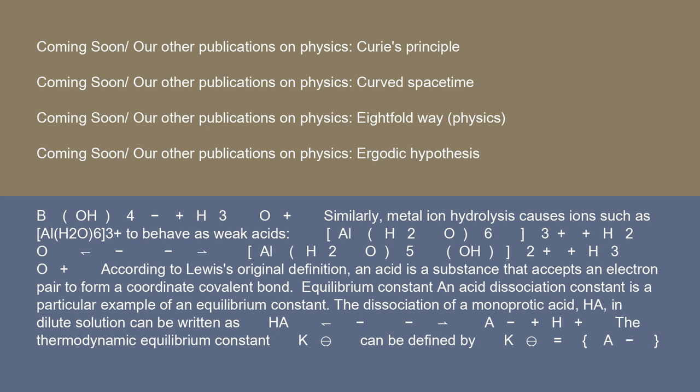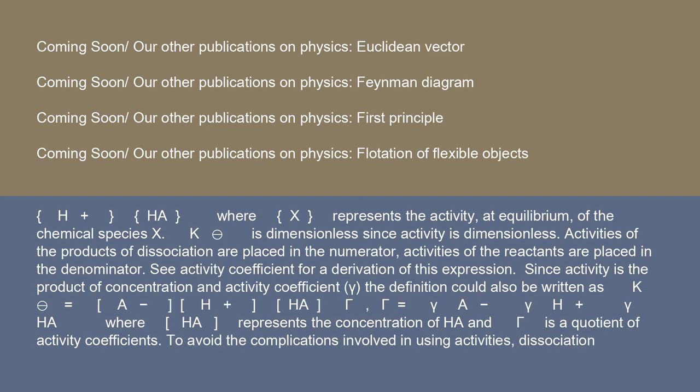The dissociation of a monoprotic acid, HA, in dilute solution can be written as HA ⇌ A⁻ + H⁺. The thermodynamic equilibrium constant K° can be defined by K° = {A⁻}{H⁺}/{HA}, where {X} represents the activity at equilibrium of the chemical species X. K° is dimensionless since activity is dimensionless. Activities of the products of dissociation are placed in the numerator. Activities of the reactants are placed in the denominator.